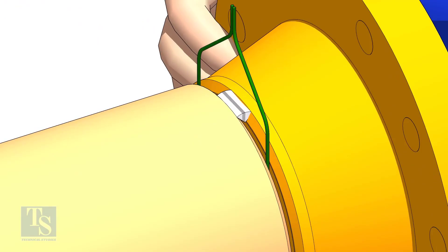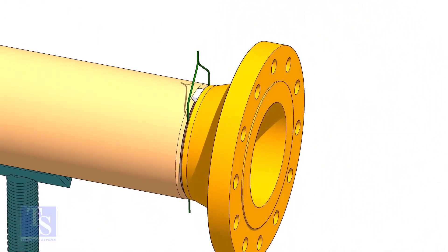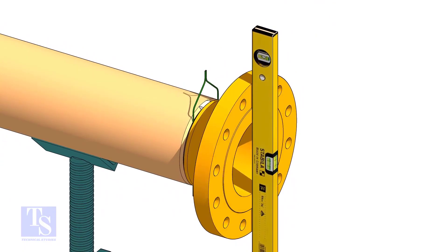TAC weld on the top side of the joint. Check the level of the flange vertically and TAC weld on the bottom side of the joint.